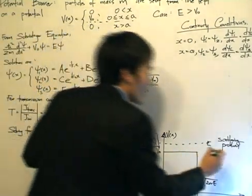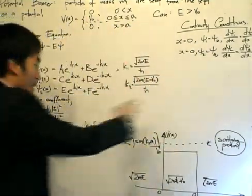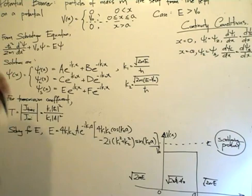What we normally call a basic scattering problem. The momentum decreases at this point, which just lowers the speed, but there's full transmission of particles.